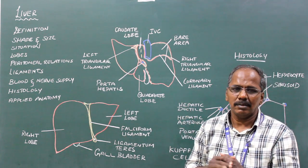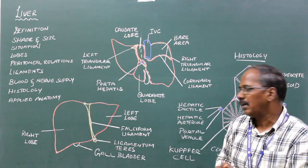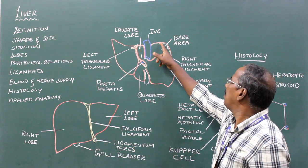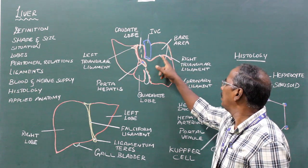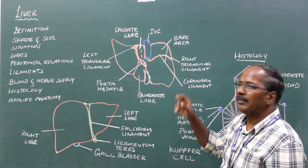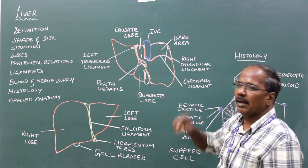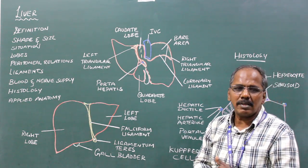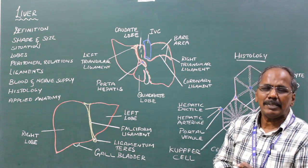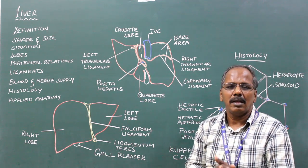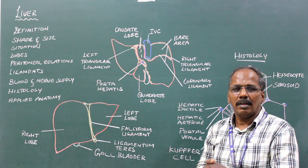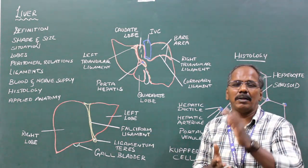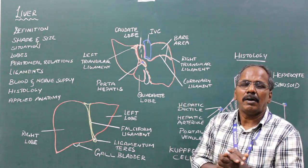Ligaments. The ligaments of the liver include: number one, falciform ligament; number two, coronary ligament; number three, right triangular ligament; number four, left triangular ligament; number five, lesser omentum; number six, ligamentum teres; number seven, ligamentum venosum. The ligamentum teres and ligamentum venosum are true ligaments. The others form false ligaments.